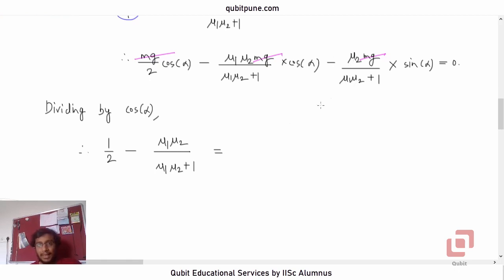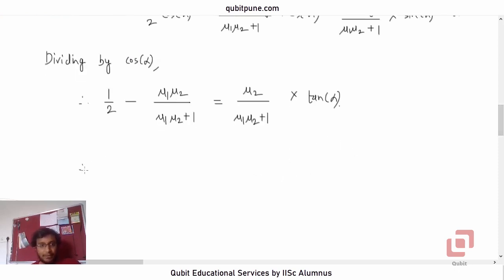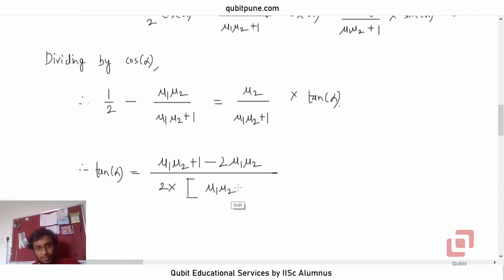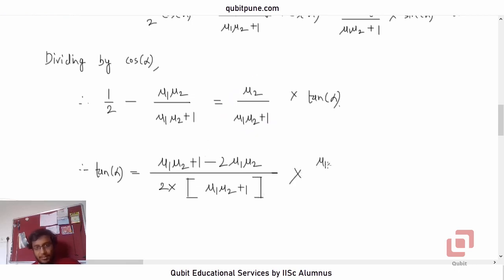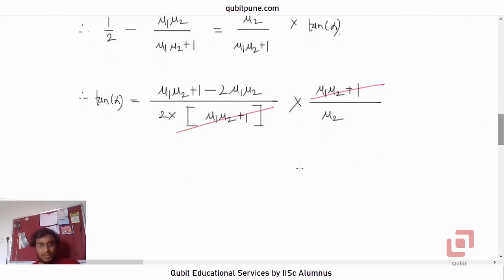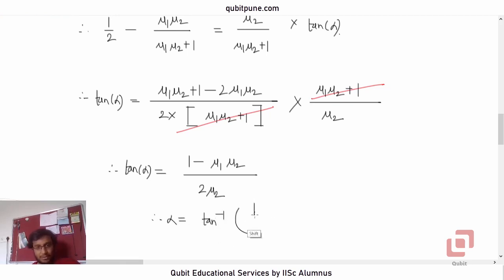Rearranging for tanα, we take the LCM of (μ1·μ2 + 1). This gives: tanα = [(μ1·μ2 + 1) − 2μ1·μ2] / (2μ2), which simplifies to tanα = (1 − μ1·μ2) / (2μ2). Therefore alpha = tan⁻¹[(1 − μ1·μ2) / (2μ2)].